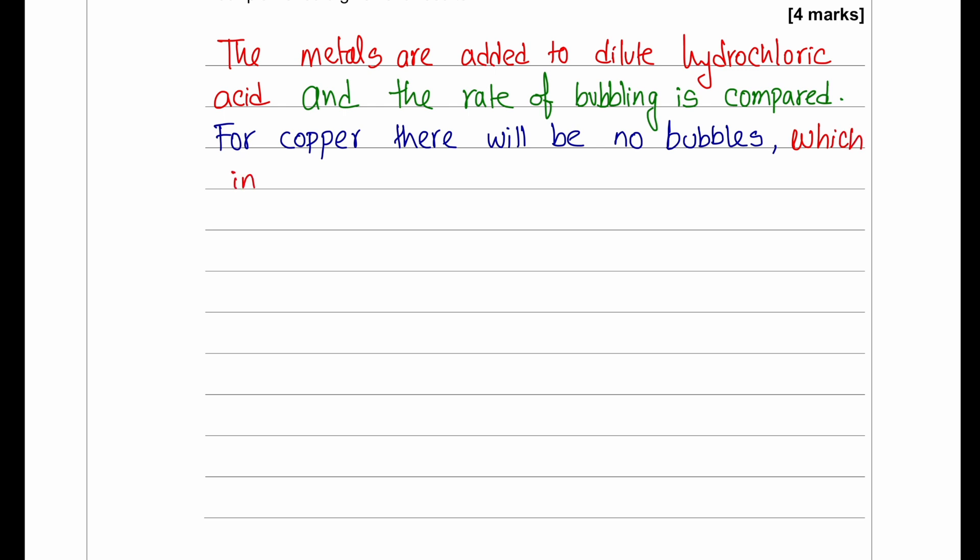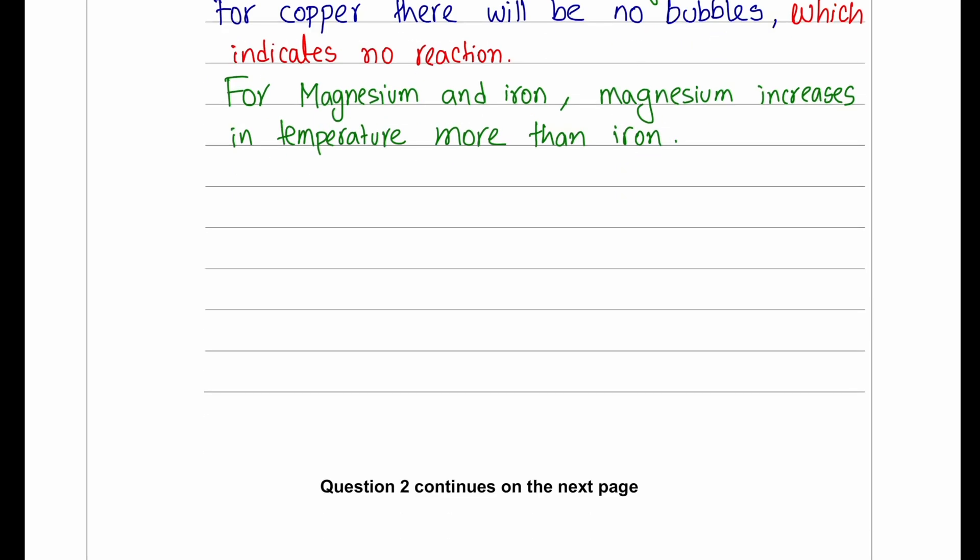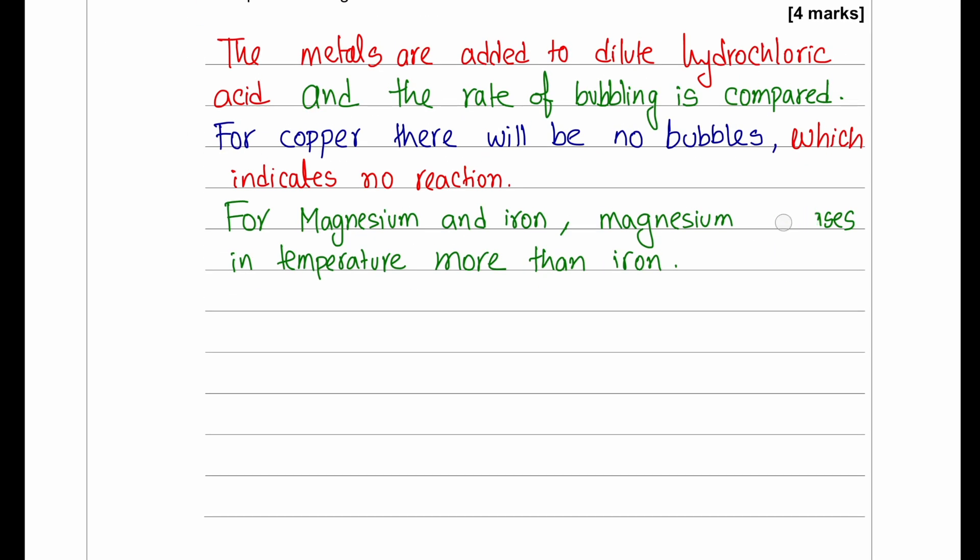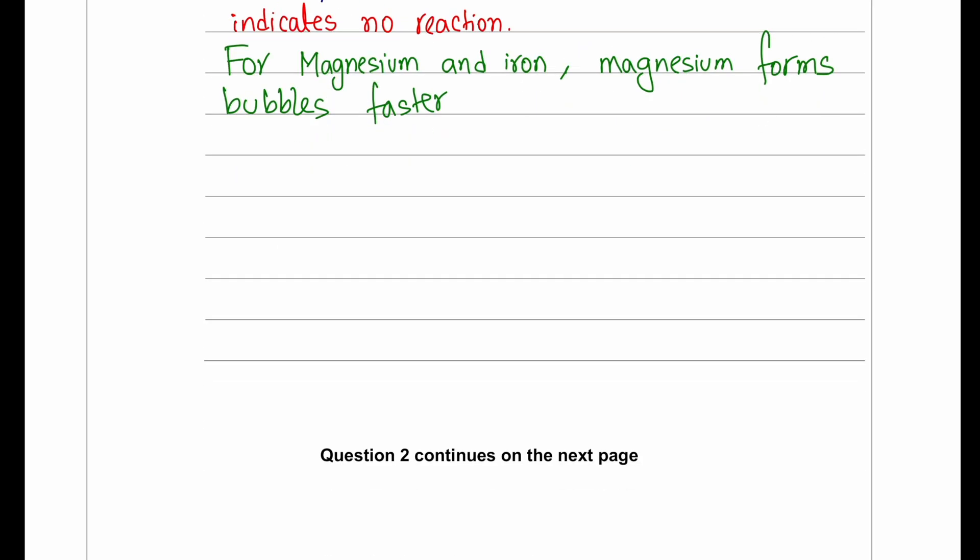When you react dilute hydrochloric acid with magnesium and iron, because magnesium is more reactive, it's going to form bubbles more rapidly compared to iron. Iron is going to form bubbles, but it's going to be a little less. To keep this experiment fair, we can use the same volume and same concentration of acid, and for the metal part we can use the same amount or same mass of metal.